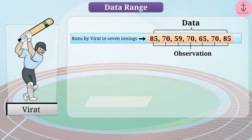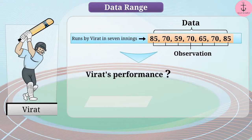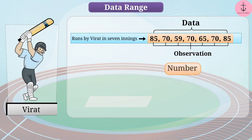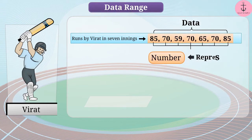Considering that we have collected data for some innings, we know how Virat has performed in these innings. However, it is difficult to get information about Virat's performance in all his innings by looking at these figures, as his performance must have varied in different innings. In such situations, we need a number that can represent this group of observations — that is, a central tendency for the entire data set.